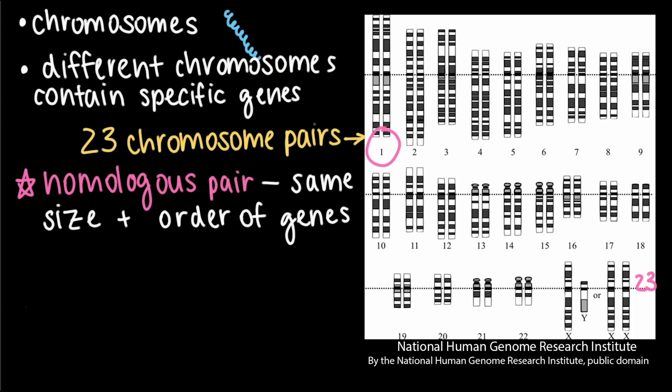Also, in case you're wondering, the last chromosome set is a little different because chromosome 23 is the human sex chromosome, which influences the biological sex of the individual — but we don't have to get into that just yet. What's important to know is that sexually reproducing organisms with two sets of chromosomes in each of their cells are called diploid.